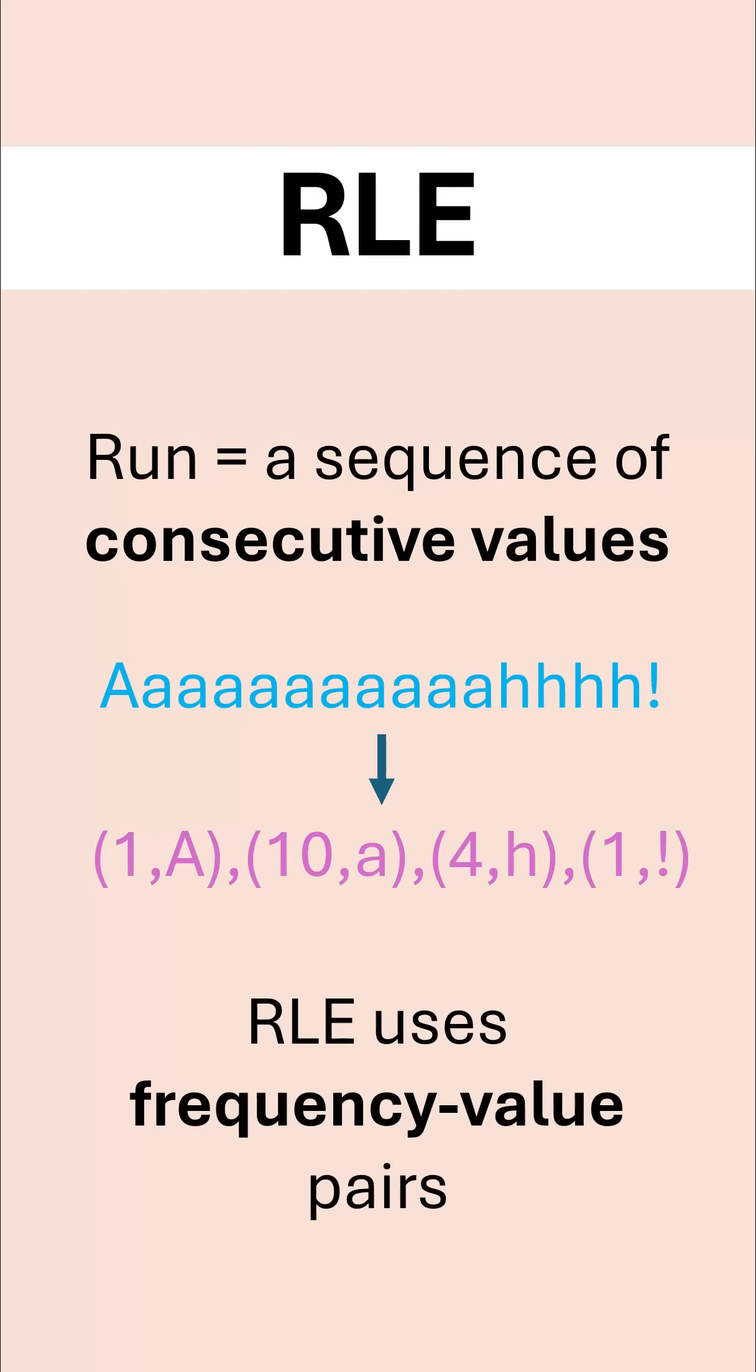So we can see capital A occurs once. You then have 10 occurrences of lowercase a, four occurrences of lowercase h, and one occurrence of the exclamation mark.